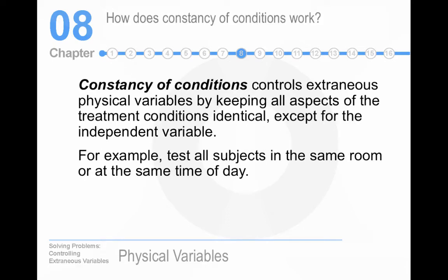Constancy of conditions means you keep all aspects of the treatment conditions identical, except for the independent variable. I think it's the best way of dealing with extraneous variables because it controls variables you haven't identified — things like the room, the time of day, the day of the week, the gender of the experimenter, instructions given to participants, etc. All of those could potentially be extraneous variables, and you're able to hold them constant.